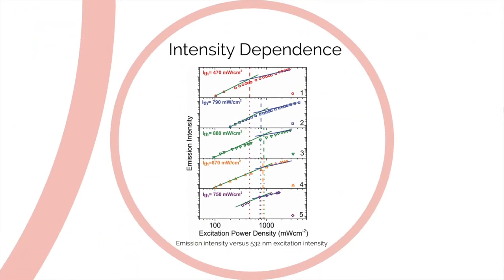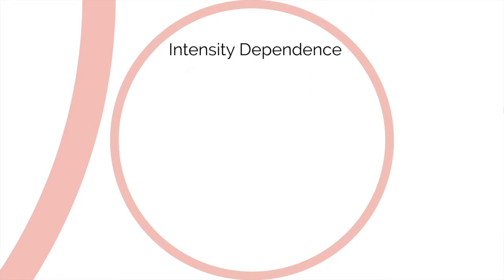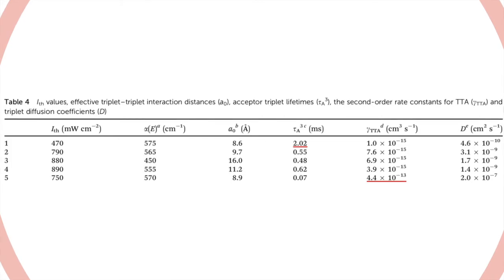We also performed intensity dependence study. For the emission intensity for bilayer films versus 532 nm excitation intensity diagram, we can see that all five bilayers exhibit a quadratic to linear intensity dependence, which is symptomatic of TTA-UC mechanism. The quadratic to linear crossover intensity, also known as I-th value, was found for all five bilayers. I-th value is very important because it represents the intensity at which upconversion becomes the most efficient. From I-th value, we calculated a second-order rate constant for triplet-triplet annihilation, gamma TTA. We also calculated acceptor triplet lifetimes.